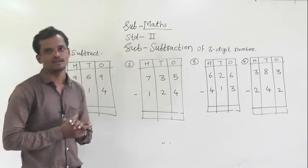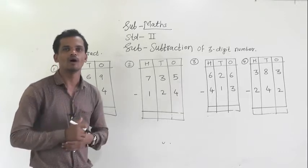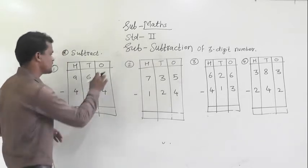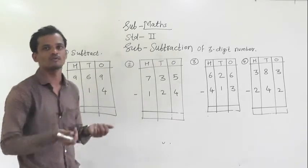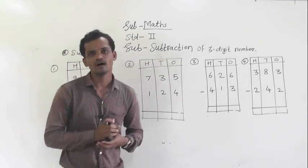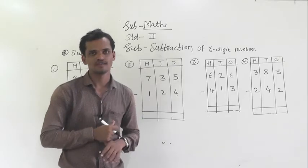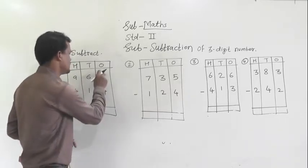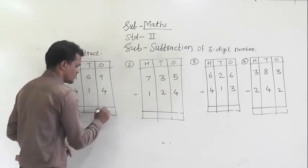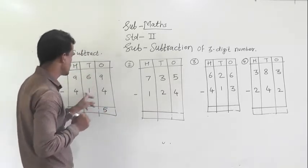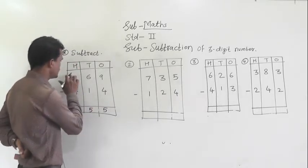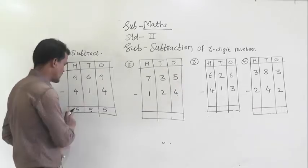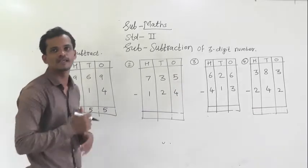Let's subtract the values starting from the 1's place, or right-hand side. 9 minus 4 — by using backward counting you can solve this. 9 minus 4 is 5, then 6 minus 1 is 5, and 9 minus 4 is also 5. So 555 is the answer.